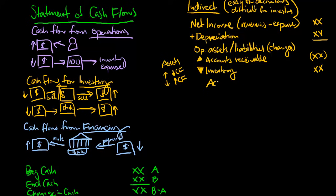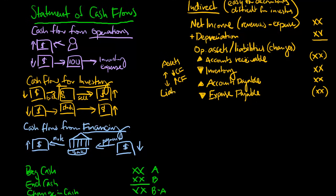Then we look at our operating liabilities — accounts payable, which is how much we owe our suppliers who provide us inventory that we buy on account. If our accounts payable goes up, that means we have not paid as much cash for that inventory, meaning we haven't paid off our bills. If accounts payable goes up through the year, we are taking more credit and holding on to more cash. So an increase in a liability will increase our cash flows. Whereas if we pay off something like an expense payable — salaries payable and so forth — and those go down, we've reduced our liabilities and reduced our cash by paying cash to reduce those liabilities. So a decrease in liabilities will have a negative effect on our cash flows.